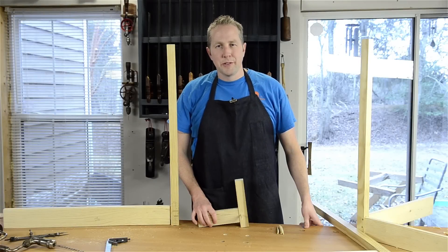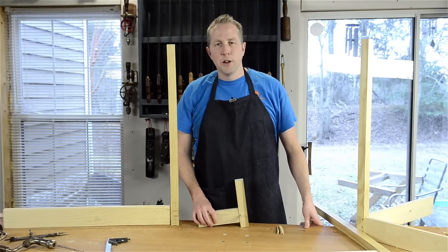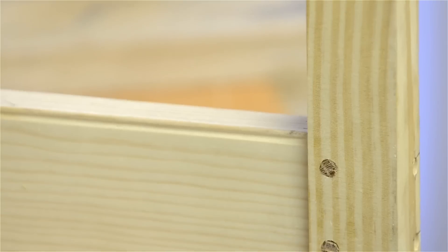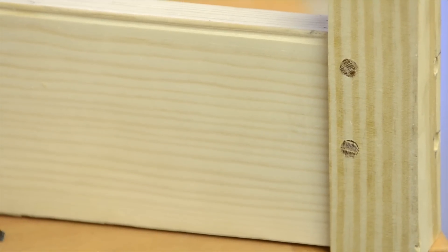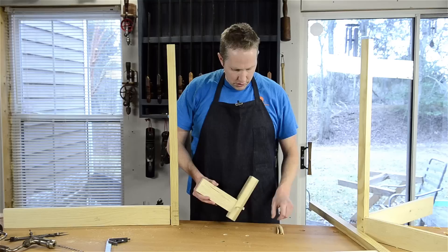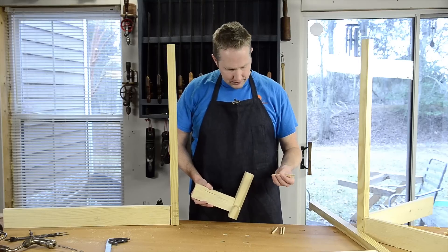I'm Joshua Farnsworth and thanks for watching Wood and Shop. In this video I'm going to show you a historical method for tightening mortises and tenons together even without glue, called draw boring. Draw boring uses wooden pegs or pins.